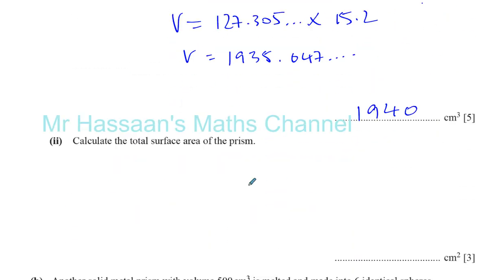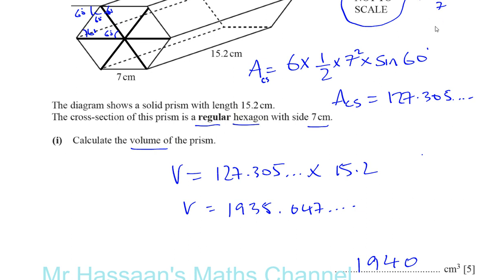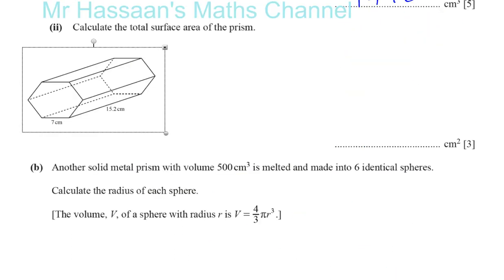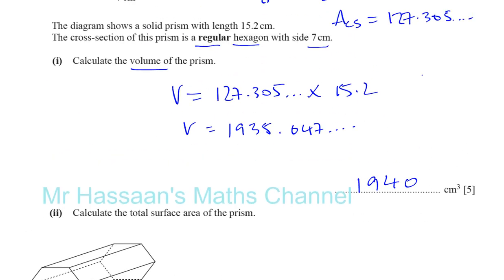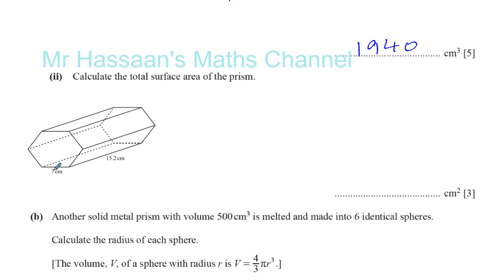Now, second, it tells us to find the total surface area of the prism. For the total surface area of the prism, I'll just copy the picture of the prism down here so we can see it. You've got to find the area of all these surfaces. So you have the area of the hexagon on both sides. There's two times the area of the cross-section.